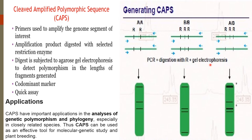The digest is then subjected to agarose gel electrophoresis to detect polymorphism in the length of the fragments generated. CAPS is a co-dominant marker, and this assay is very quick.